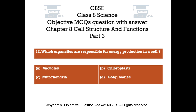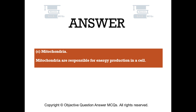Question number 12: Which organelles are responsible for energy production in a cell? — Option A: Vacuoles, Option B: Chloroplasts, Option C: Mitochondria, Option D: Golgi bodies. The right answer is Option C: Mitochondria. Mitochondria are responsible for energy production in a cell.